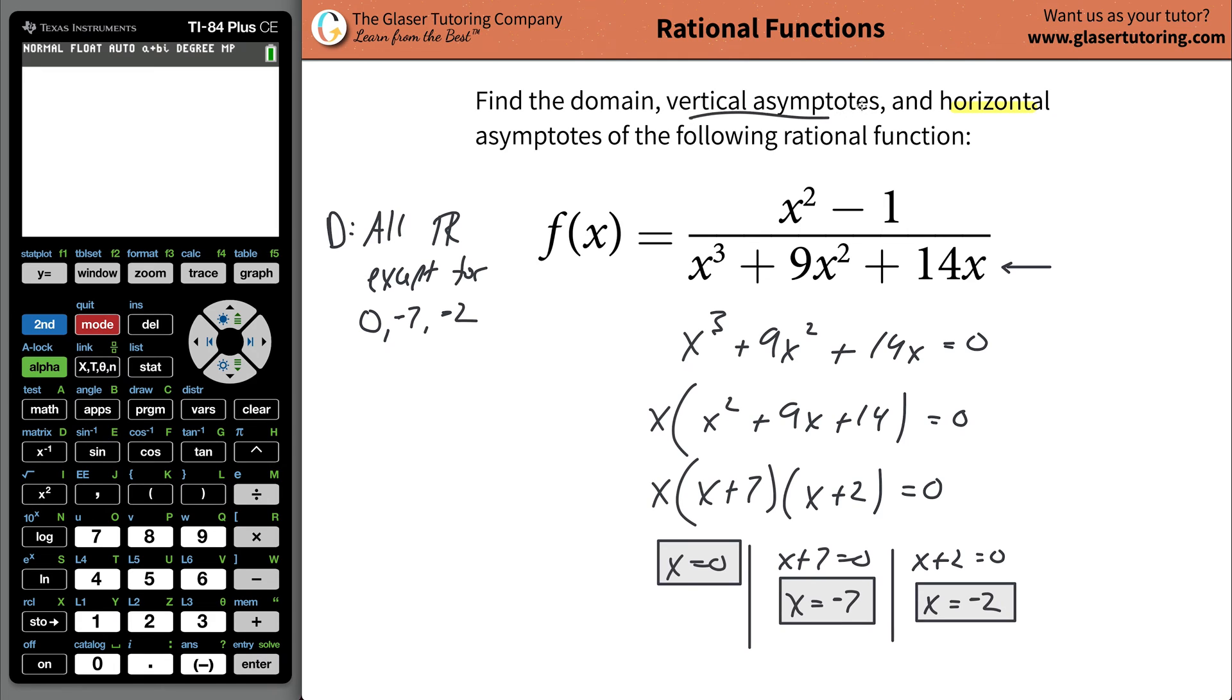Now, next thing is the vertical asymptotes. Now it turns out when we do vertical asymptotes, what you're going to do is you want to first make sure you have everything in fully factored form. Now on a problem like this, maybe we have some common factors and whatnot. This I can see is kind of a perfect square. So what I would do is I would write this now in fully factored form.